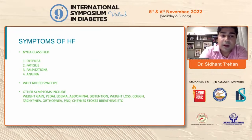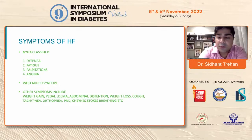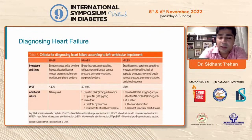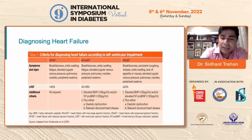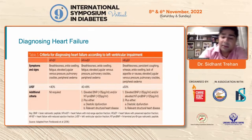What are the symptoms of heart failure? Originally classified by NYHA: dyspnea, fatigue, palpitations, and angina. Recently WHO added syncope. Other symptoms also include weight gain, pedal edema, abdominal distension, weight loss, cough, tachypnea, orthopnea, PND, and Cheyne-Stokes breathing. The diagnosis of heart failure is based on signs and symptoms, along with imaging proof or biochemical proof of heart failure. We can assess ejection fraction through imaging using echo scans or cardiac MRI, and for biochemical assessment, we can use elevated BNP or elevated NT-proBNP.